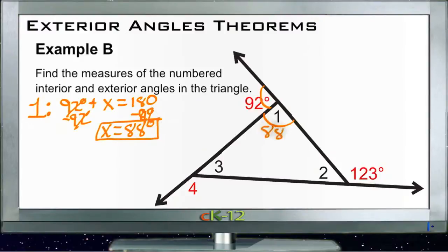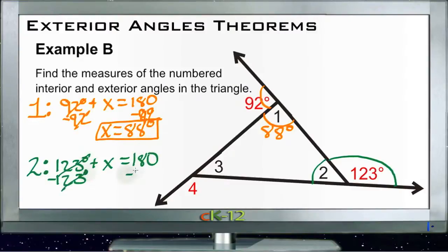Now for angle 2 over here, it's a linear pair with 123 degrees. So for angle 2, same process: we do 123 degrees plus our missing angle equals 180. Subtract 123 degrees from each side, and we get x equals 57 degrees. So angle 2 is 57 degrees.